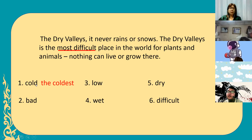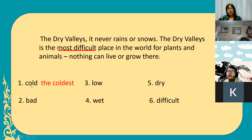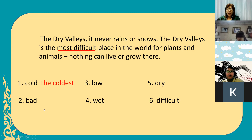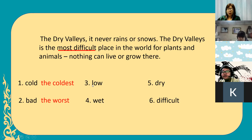You have to answer this in your book — give the superlative of its regular adjective. Number one is 'the coldest' because our regular adjective is 'cold'. Number two — 'the worst'. Number three — low — 'the lowest'. Number four, Pudit — wet.